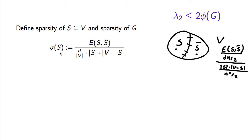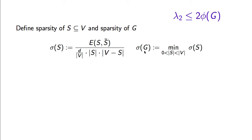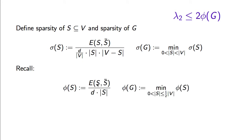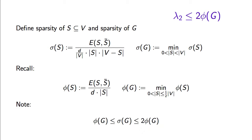So this is the sparsity of a set of vertices. The sparsity of a whole graph will be the minimum sparsity over all sets, except those for which the denominator would be a division by 0. Also, remember the way we define the expansion of a set of vertices to be just the number of crossing edges divided by the volume of S, or d times the size of S in a regular graph. The expansion of a graph is the minimum over all cuts where S is smaller than its complement. Given these definitions, it is not hard to see that the expansion of a graph is at most the sparsity of the graph, which is at most twice the expansion of the graph.